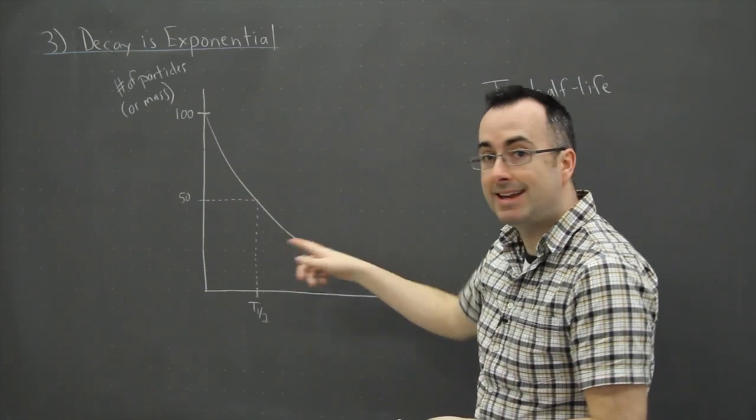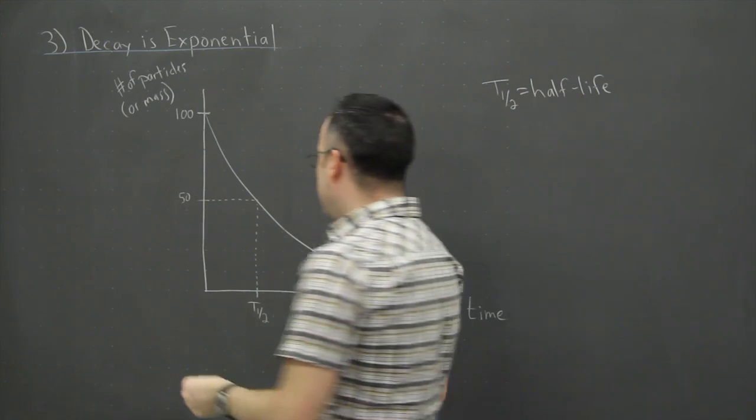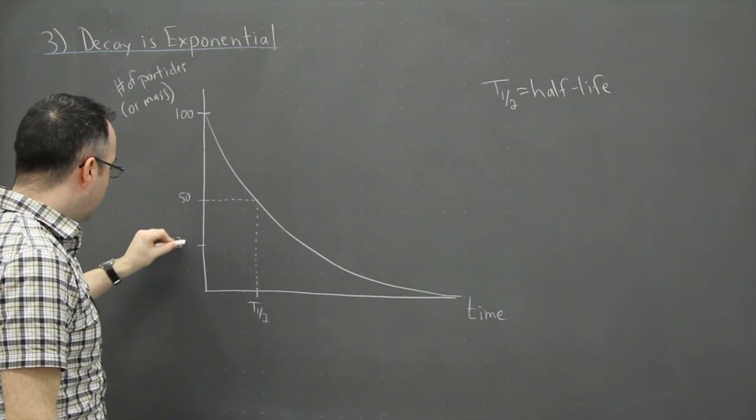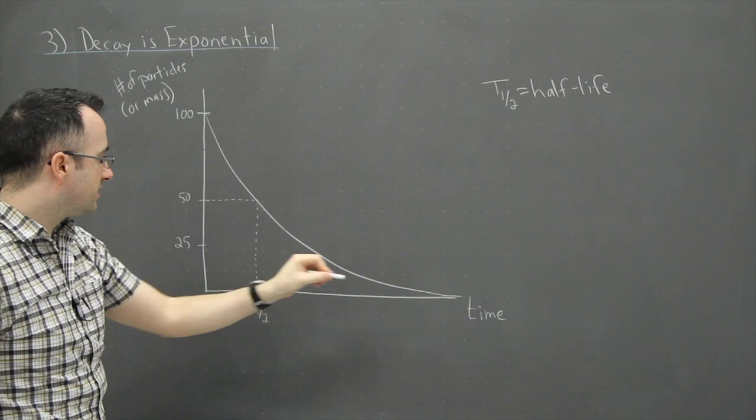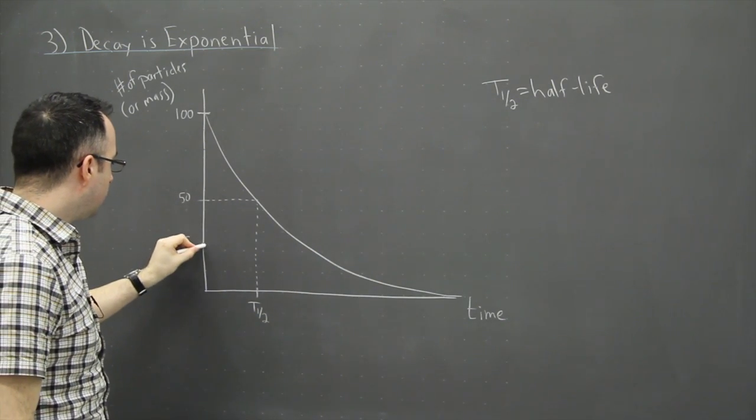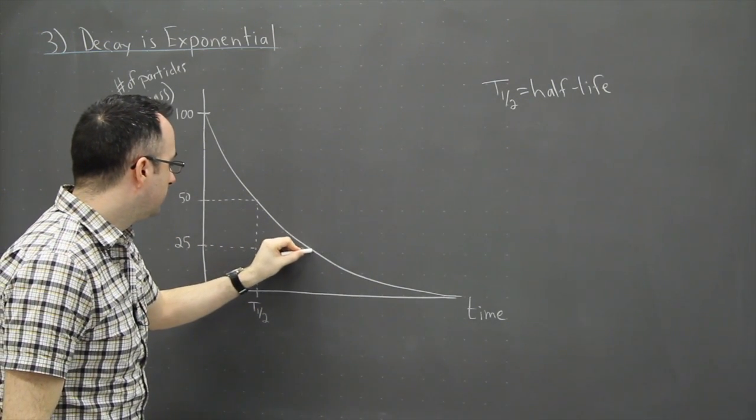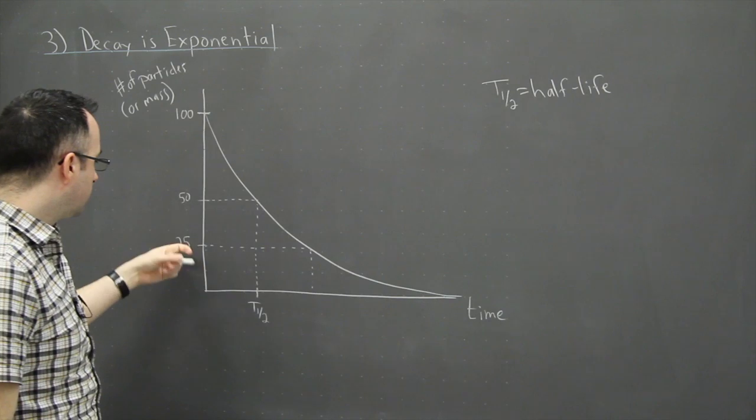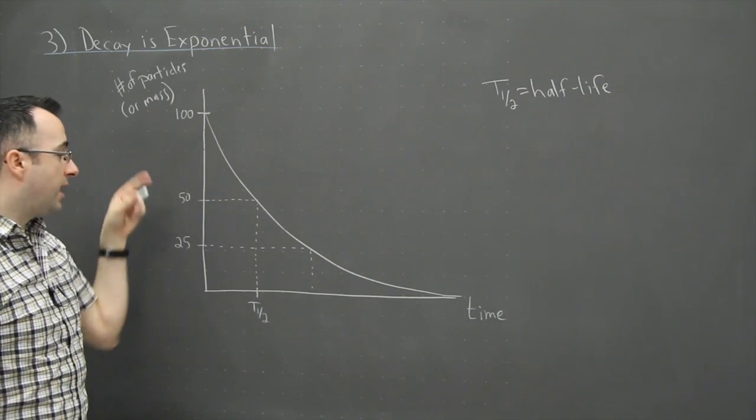Now, of course, this happens again and again, which means if we go to... Now, I don't know if I've drawn it right because I just tried to estimate what this curve looks like. If I did it right... That's close enough, actually.